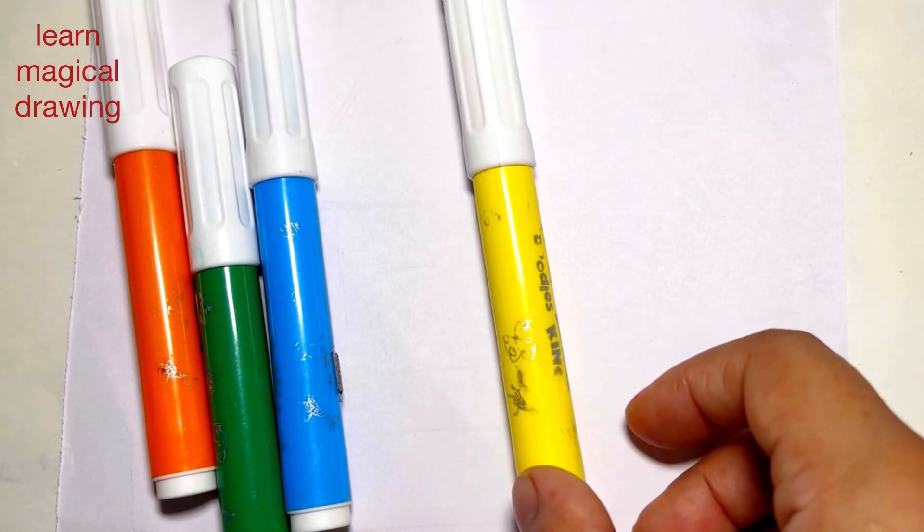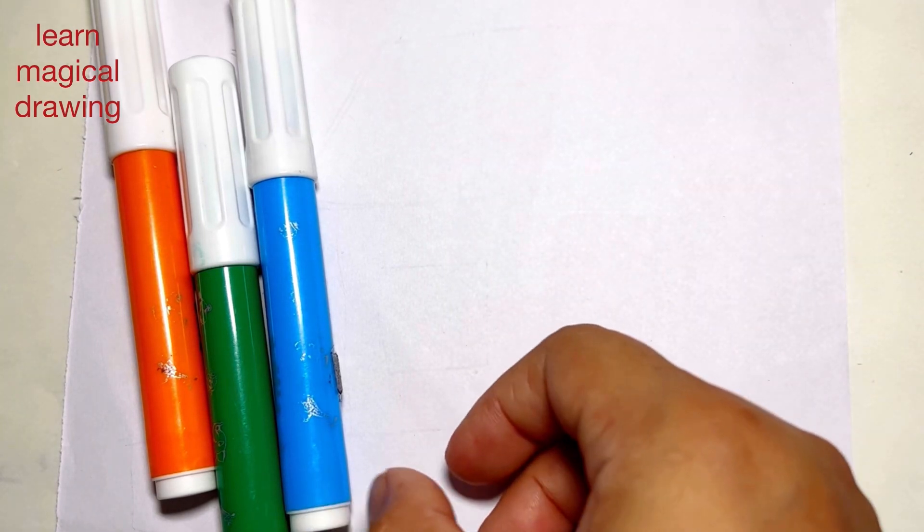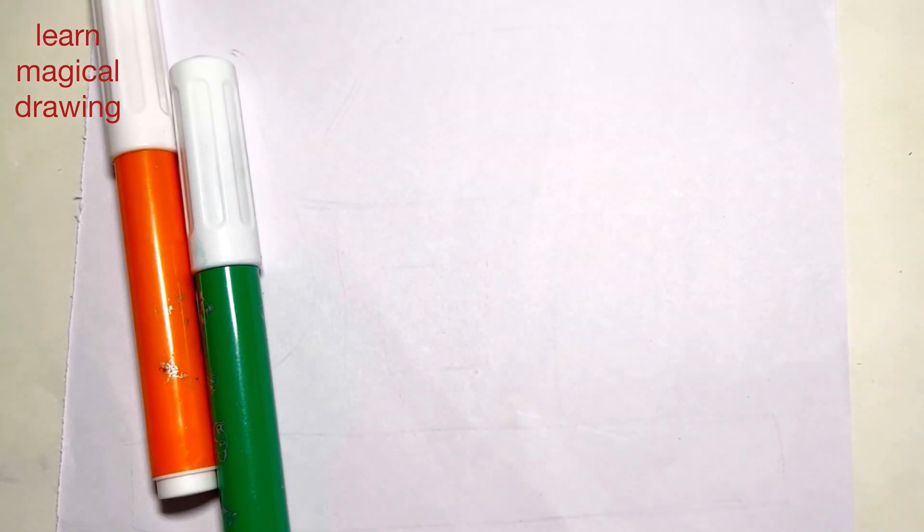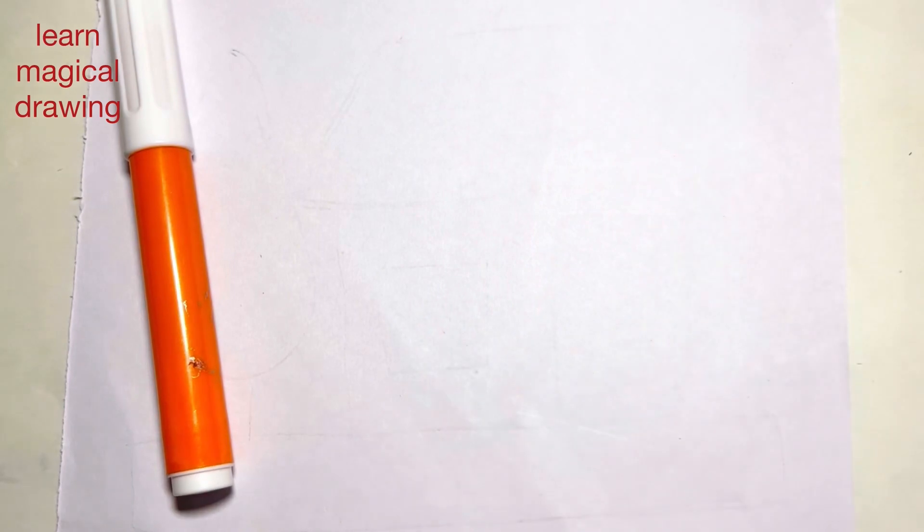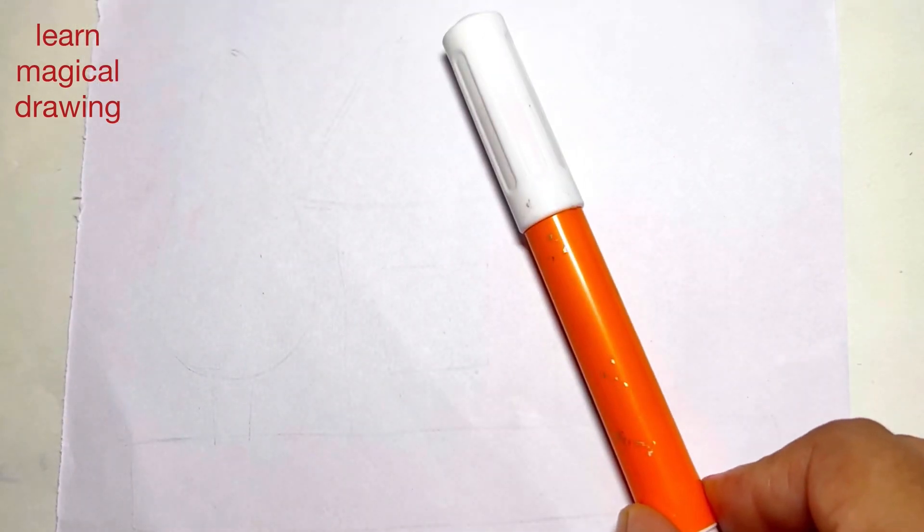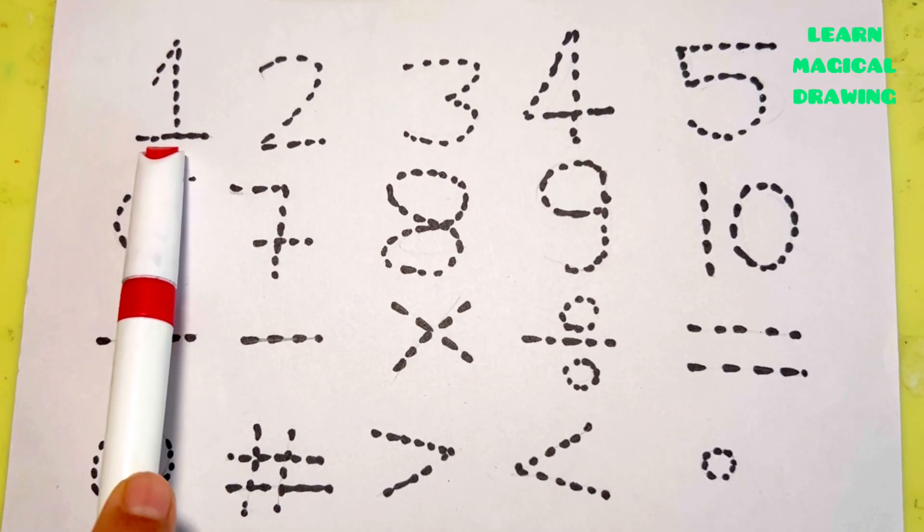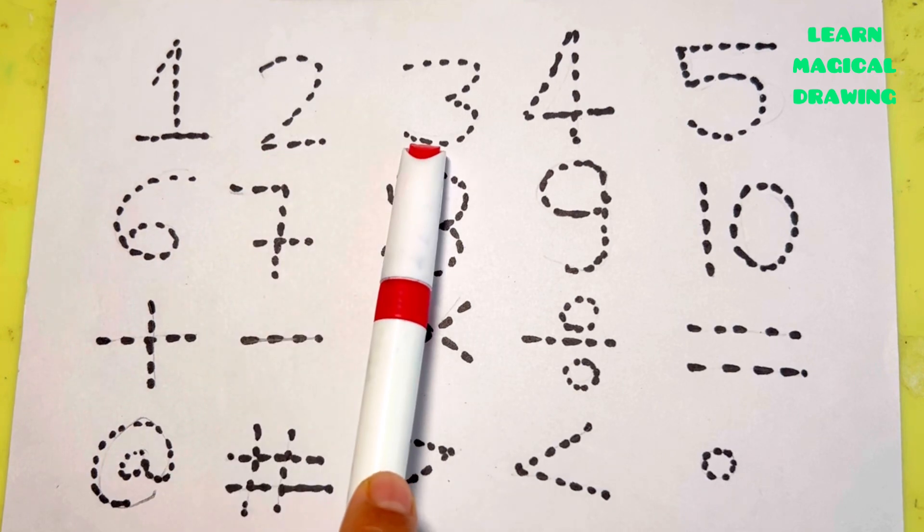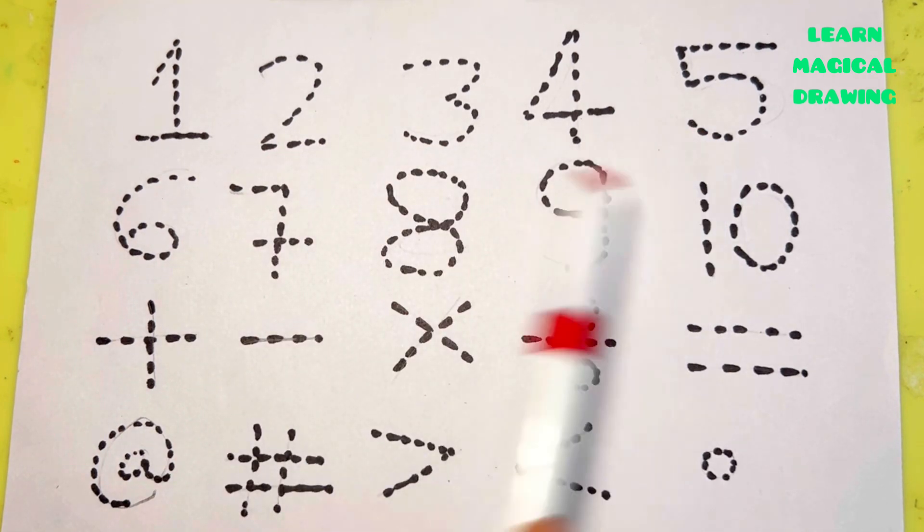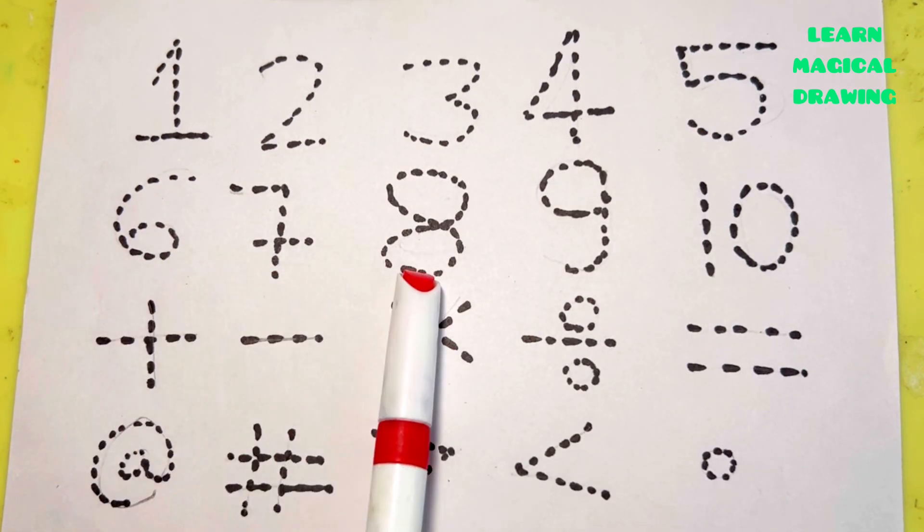Yellow color, sky blue color, dark green color, and orange color. One, two, three, four, five, six, seven, eight.